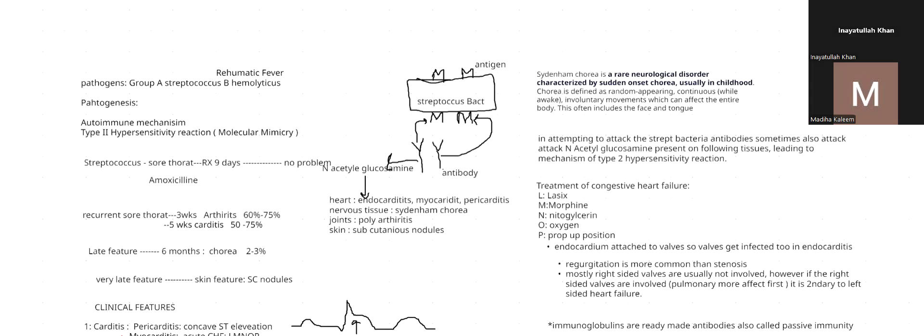Yesterday we studied about rheumatic fever. The pathogen causing rheumatic fever is Group A Streptococcus beta-haemolyticus. The pathogenesis of this rheumatic fever is a type 2 hypersensitivity reaction, which is also called molecular mimicry.